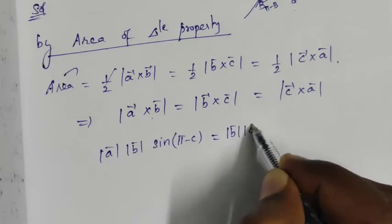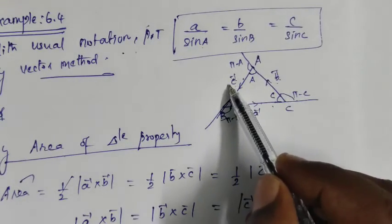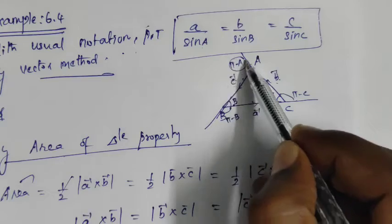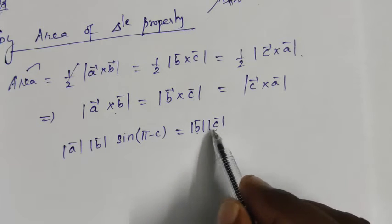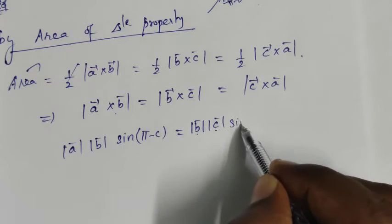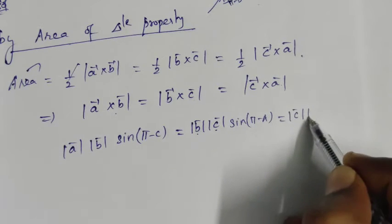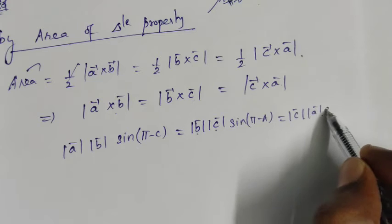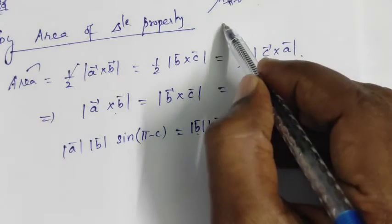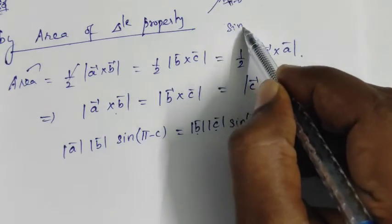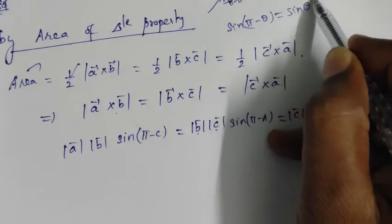Similarly, magnitude of B vector times magnitude of C vector times sin(π minus A). And magnitude of C vector times magnitude of A vector times sin(π minus B). Now we use the identity: sin(π minus θ) = sin θ.